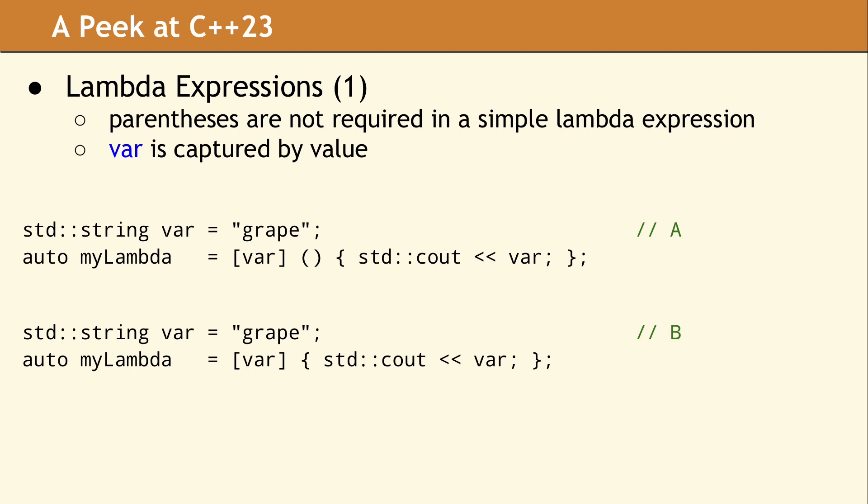Lambda expressions were added in C++11. Although it may not be widely known, you could omit the parentheses when the parameter list was empty, but only with simple lambda expressions. It seems like most developers included the parentheses for consistency or readability. But as these expressions get longer and more complicated, leaving off unnecessary parts can be desirable. The two examples we are showing have exactly the same meaning, even though the empty parameter list is shown in example A and was removed in example B. Calling either of these lambdas will produce the same result — the string grape is sent to standard out.